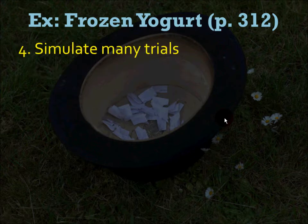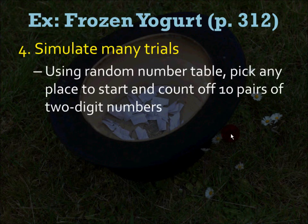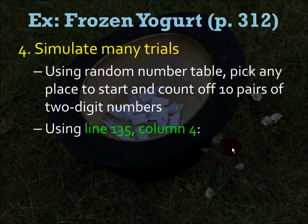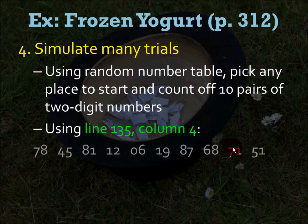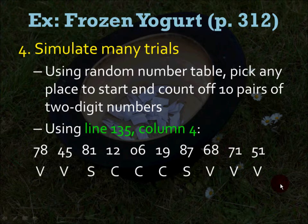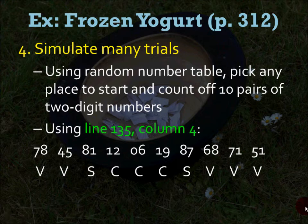Fourth, simulate many trials. I'm only going to do one, and you're only going to do one, using the random number table at the top of page 5-18. You have just enough digits to do 10 trials, and you don't have to worry about repeated numbers because you're treating each trial separately. I've given you line 135 starting with column 4, which gives you the pairs: 78, 45, 81, 12, and so on. Counting those, you get five vanillas, three chocolates, and two strawberries — that is one trial.